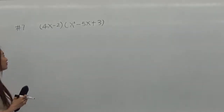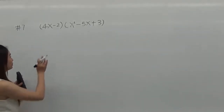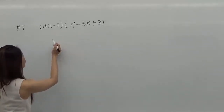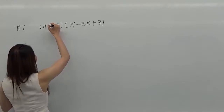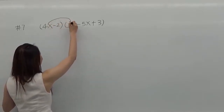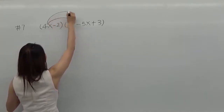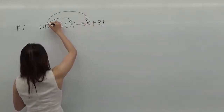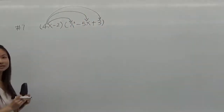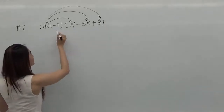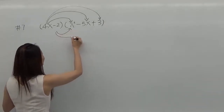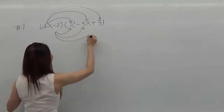Right now I'm going to use the FOIL method to distribute the first expression to the second expression. So the first thing we need to distribute is 4x: it will be 4x times x squared, 4x times 5x, and 4x times 3. We use the same way to distribute the second term to the second expression: times x squared, times 5x, and times 3.